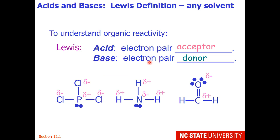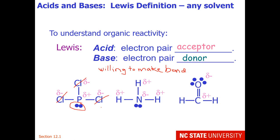Lewis bases are electron pair donors — they are willing to donate electrons to make a bond with something. When looking at the first molecule, it's generally a good idea not to consider the halogens as Lewis bases if something better is available. In this case the phosphorus has a lone pair and would be willing to make a bond, so phosphorus is the Lewis base site. For the next molecule, the nitrogen has a lone pair and is willing to do hydrogen bonding with other molecules, so this nitrogen is our Lewis base.